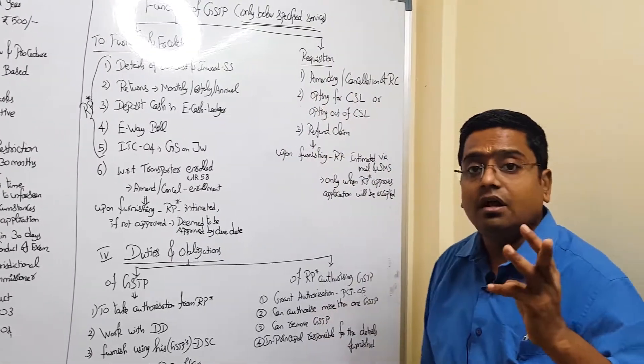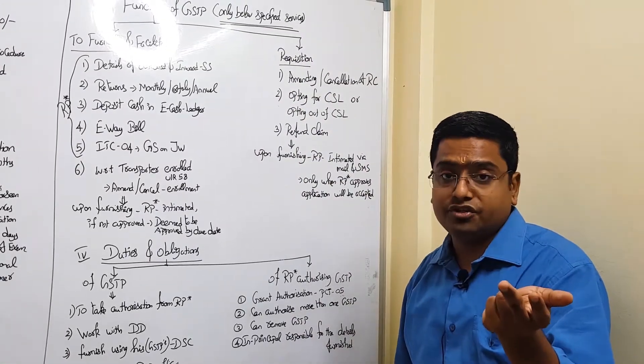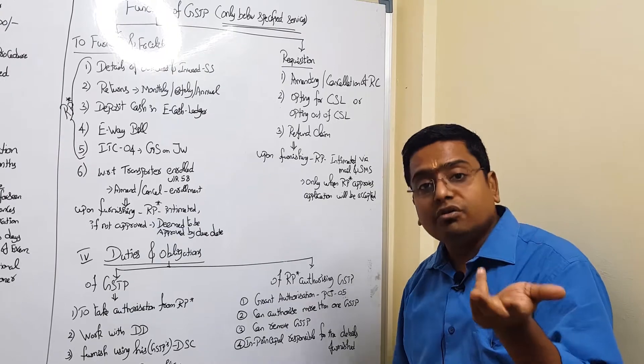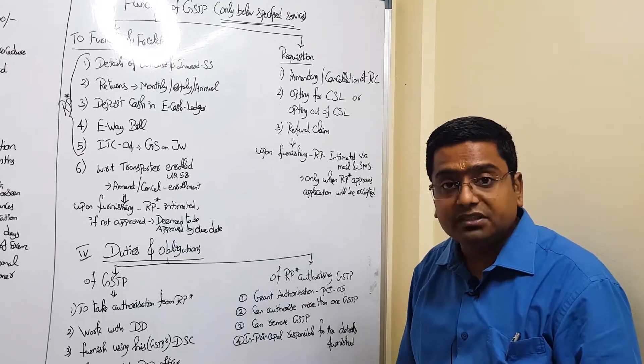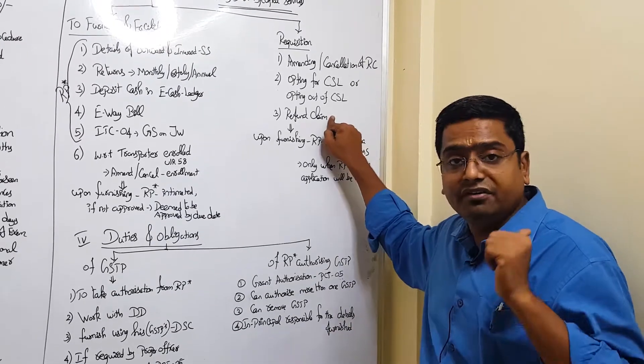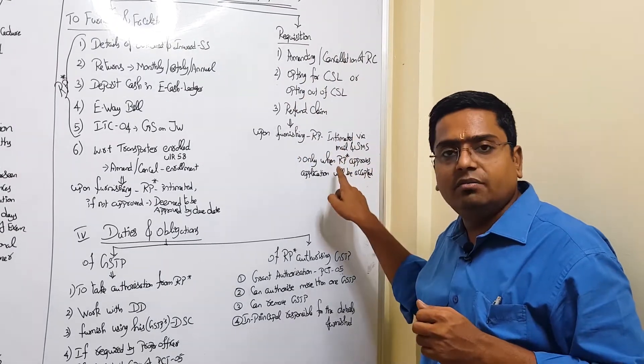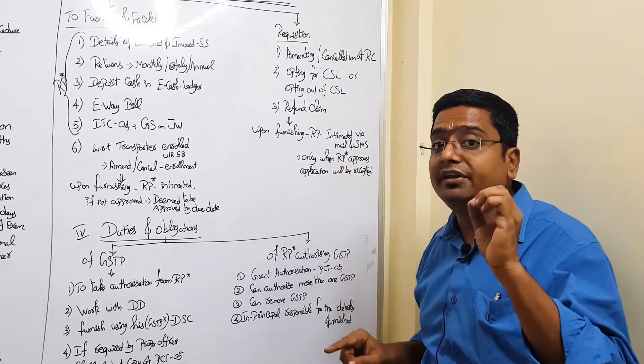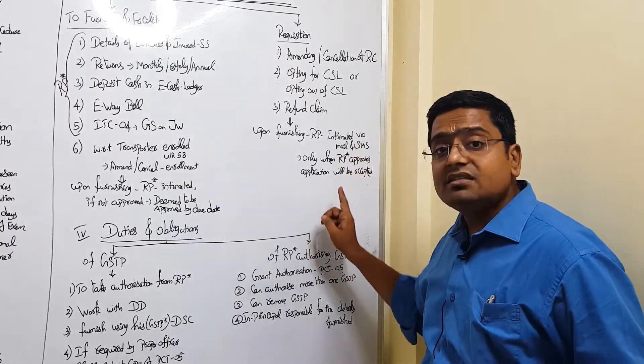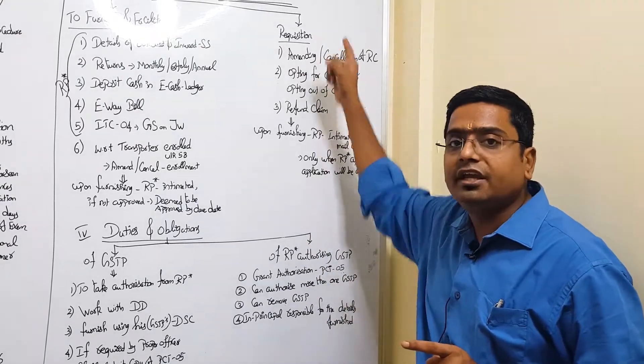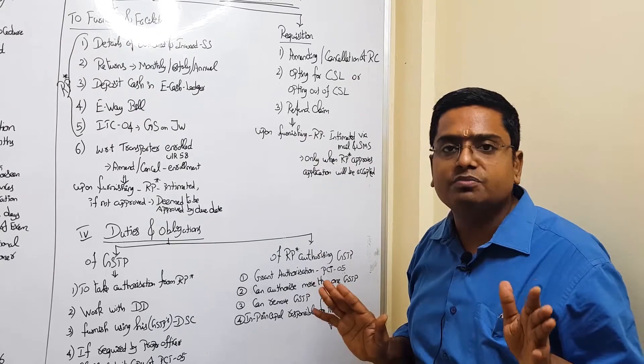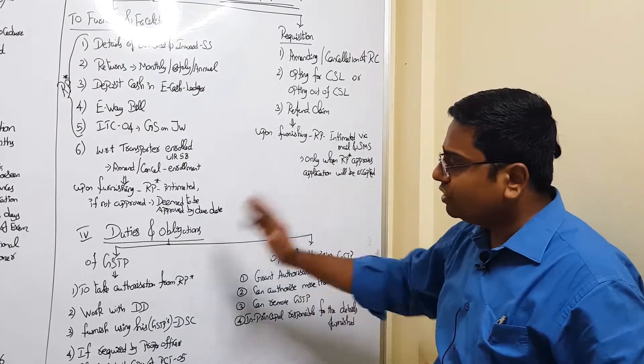And for the balance three activities, it's going to be very sensitive. The GSTP can make an amendment or cancellation of registration. He can opt-in and opt-out of composition scheme on behalf of the registered person. And he can make a request for refund claim. Upon these three requests, intimation will be sent to the registered person. Unless the registered person approves these three, it is not deemed to be furnished by the registered person.